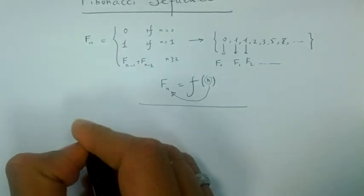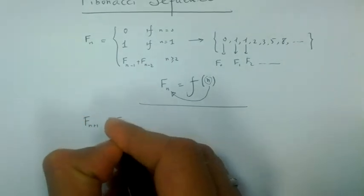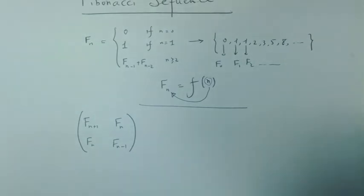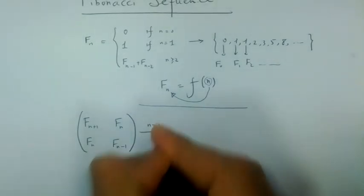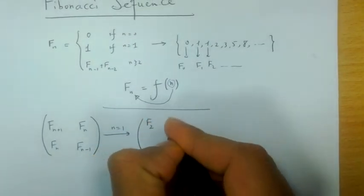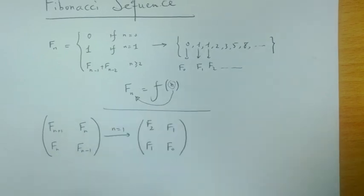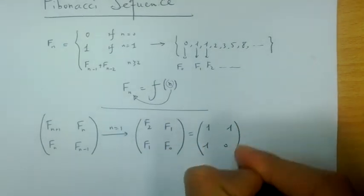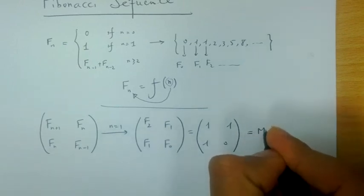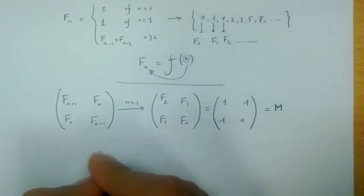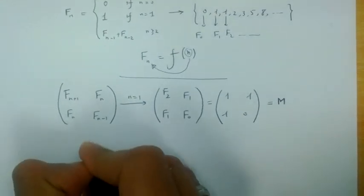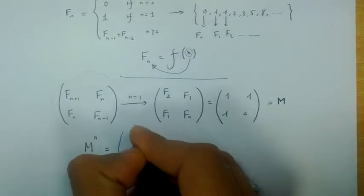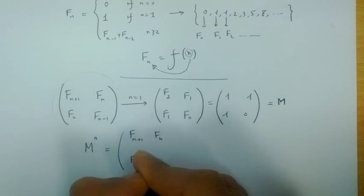I consider a matrix with entries f(n+1), f(n), f(n), f(n-1). So if n is equal to 1, I'll have f(2), f(1), f(1), f(0), and this will be 1, 1, 1, 0. If I call this matrix M, I will show that M to the power of n is exactly this matrix: f(n+1), f(n), f(n), f(n-1).